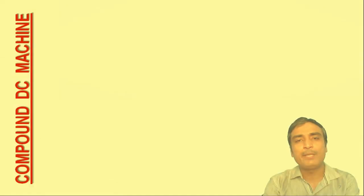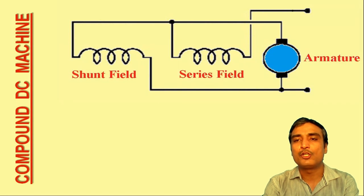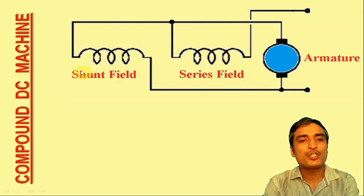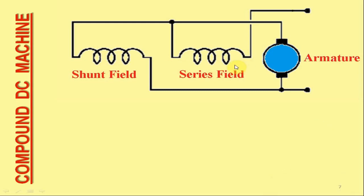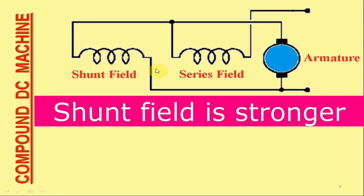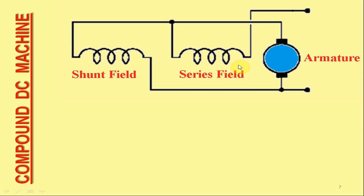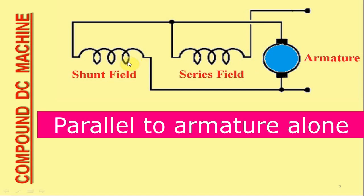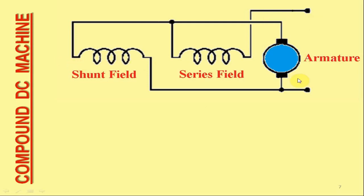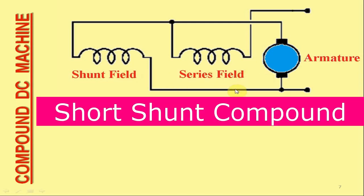Next is the compound DC machine. As you may see in the typical representation illustrated on your screen, a combination of both the shunt and series field excitations are provided. However, in a compound DC machine, the shunt field is substantially stronger than the series field. Notice that in this typical arrangement, the shunt field winding is in parallel with the armature alone. With this sort of field winding arrangement, the machine is called a short shunt compound DC machine.